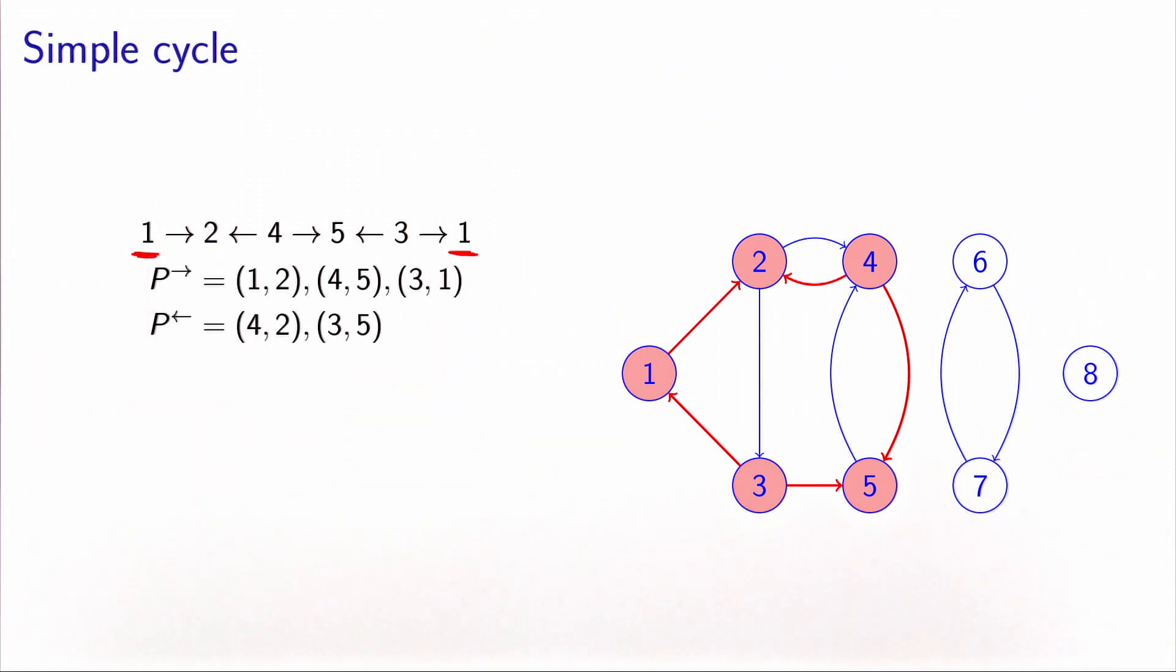This is not a forward cycle because we have backward arcs, but it's a simple cycle because with the exception of the first and the last node, every other node appears only once.